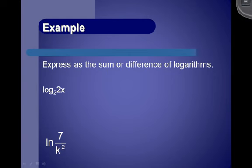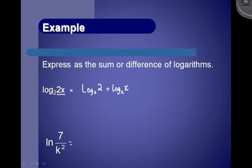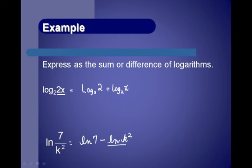Express each log as a sum or difference of logarithms. Because log_2(2x) is the log of a product, we can add the logs: log_2(2) + log_2(x). For the natural log — recall ln is the same as log base e, so all these properties still hold. For ln(7/k^2), since it's a fraction we subtract: ln(7) − ln(k^2). Applying the power rule one more step gives ln(7) − 2·ln(k).